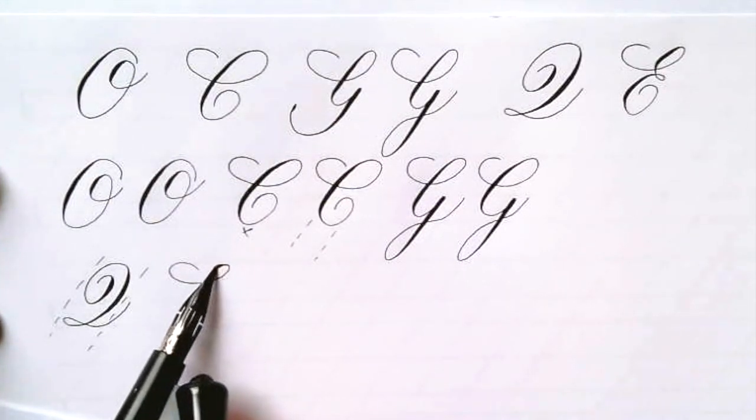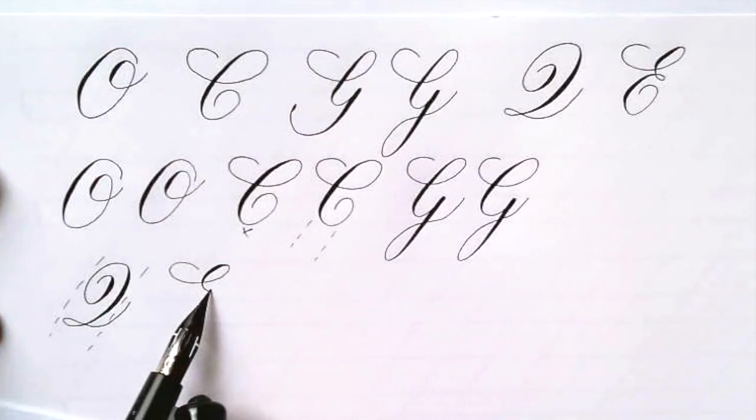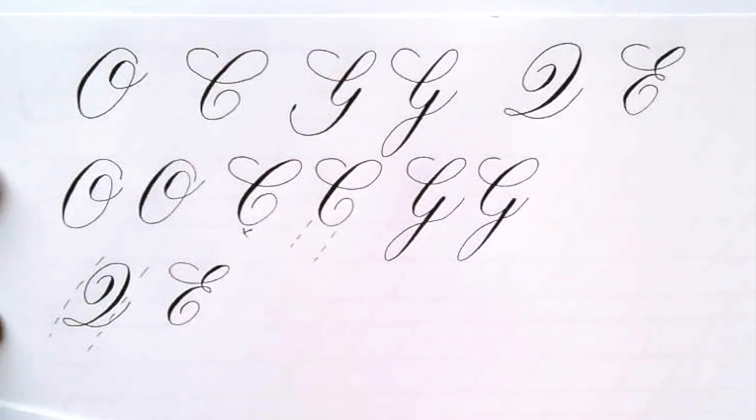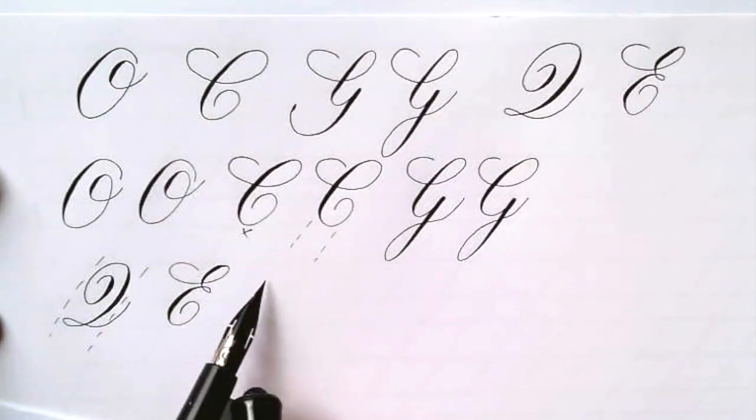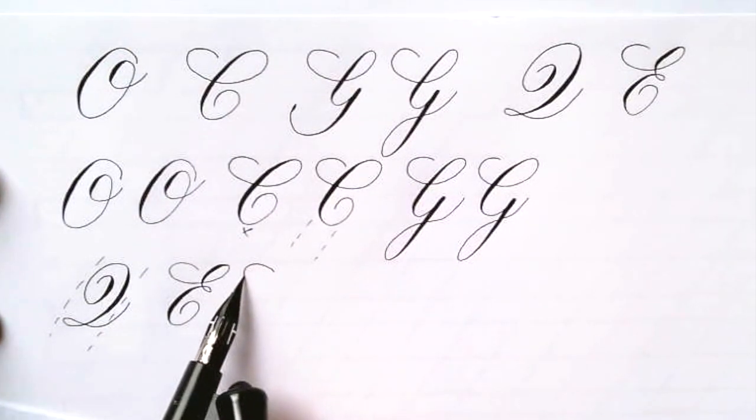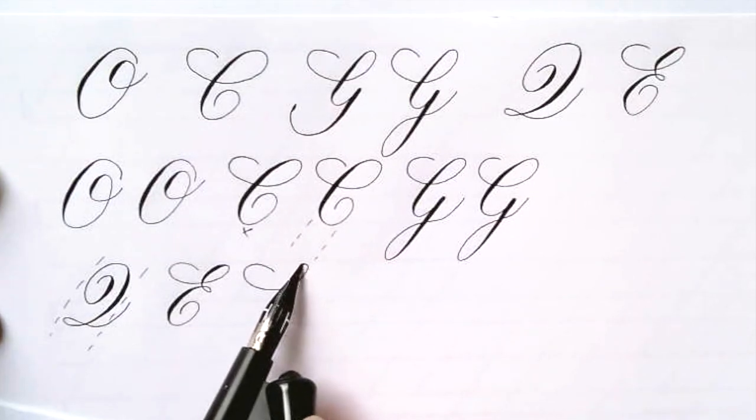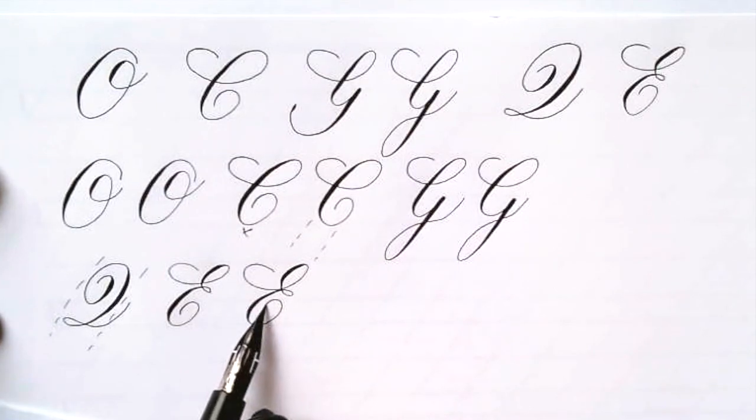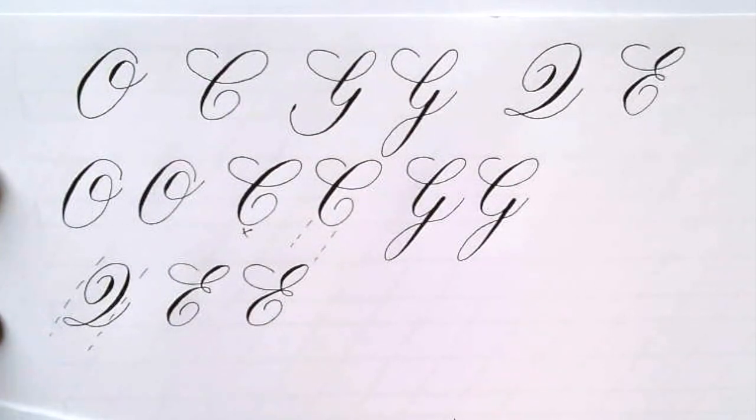The E also has a nice entrance swoop, and then the upper bowl is quite small and the lower bowl is a little larger, also with a little light circle turn to end it there. You want the upper bowl to take up maybe a third of the ascender space and then have the middle piece hit the waistline, and then the lower bowl take up most of the x-height and loop around.